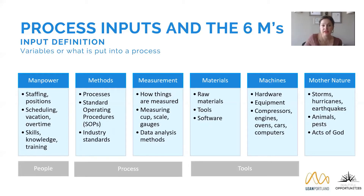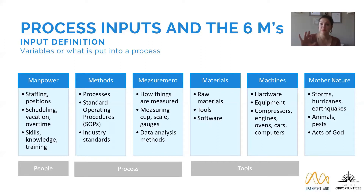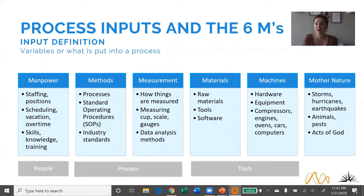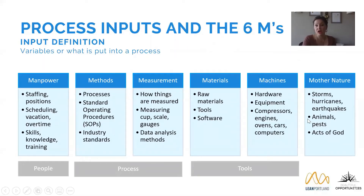Manpower can include staffing, the number of positions, the type of positions, scheduling, vacation, overtime, skills, and knowledge. You're going to speak about all of these without qualifying them as positive or negative. So it's not 'too many staff' — we just say 'staff' or 'number of people on staff' as something that causes our numbers to go up or down.